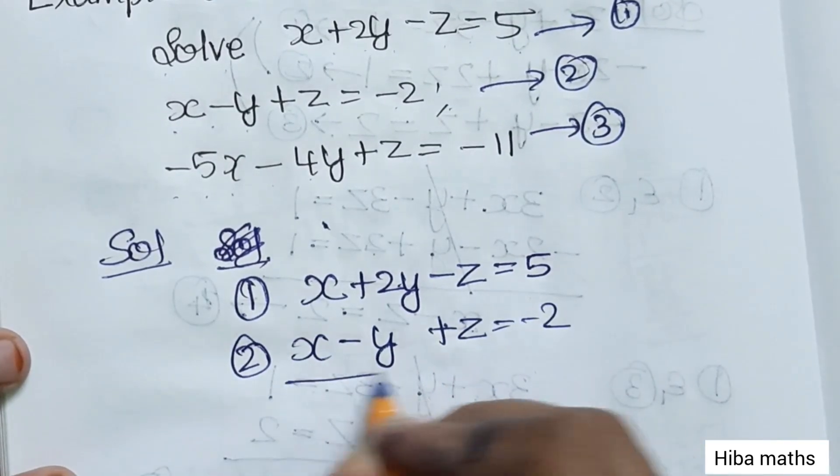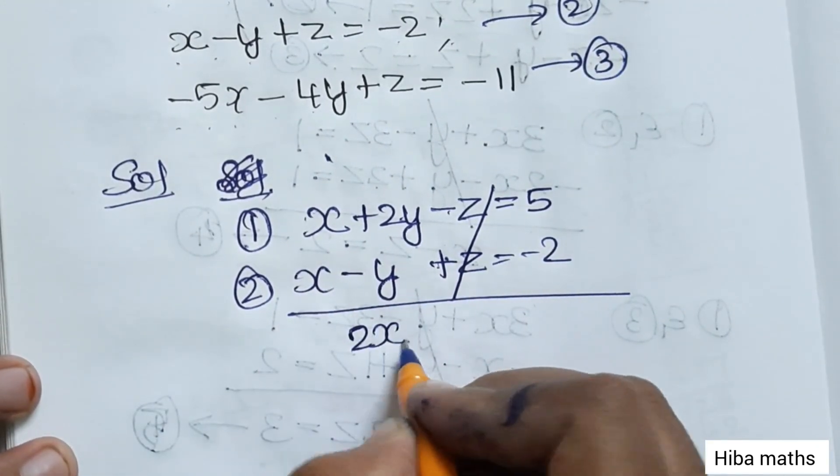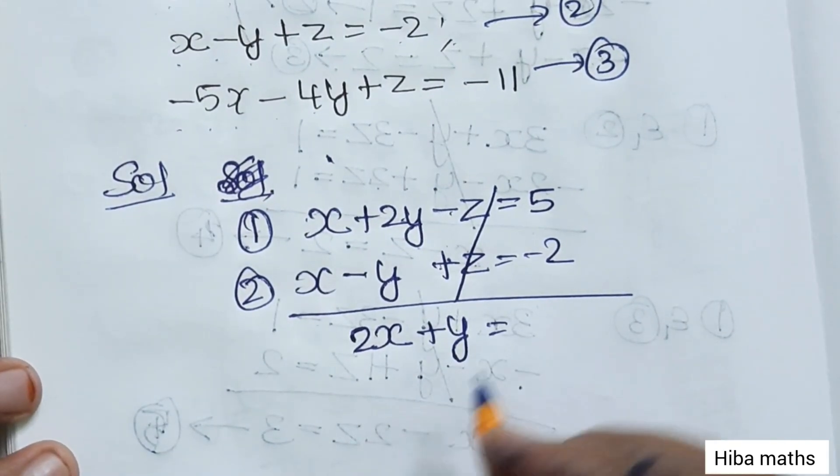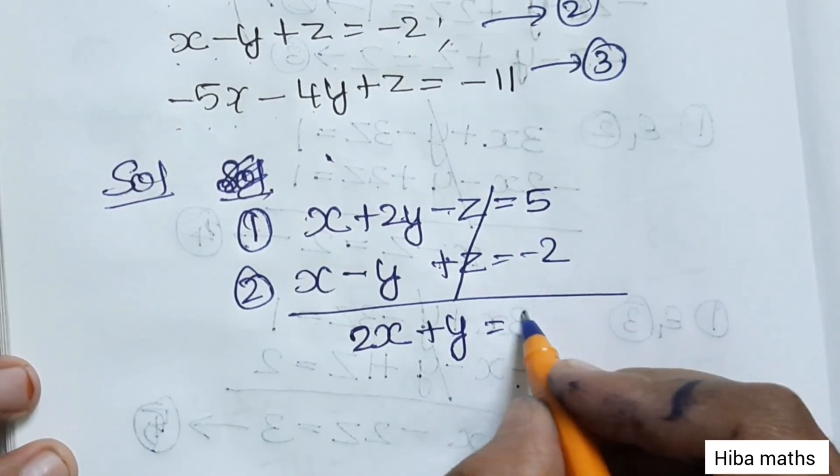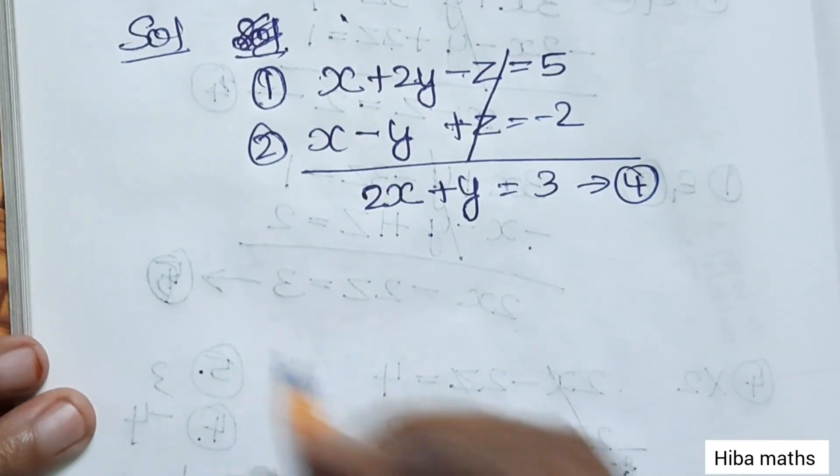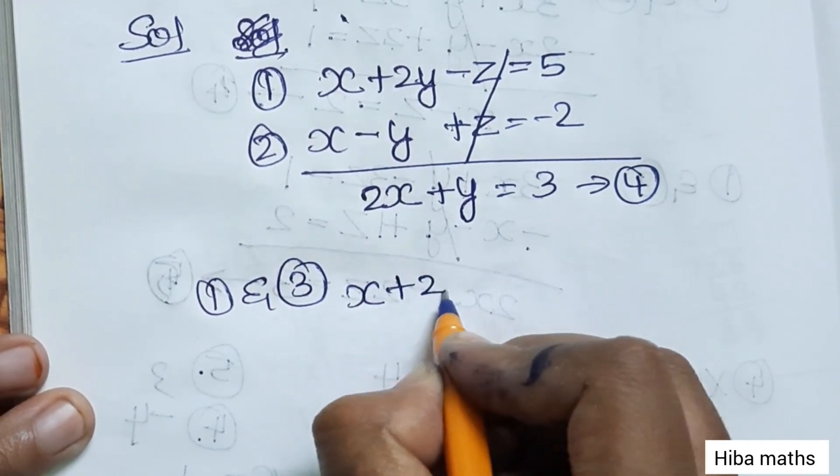Plus z minus z cancels. x plus x is 2x, 2y minus y plus y, 5 minus 2 equals 3. This is the fourth equation. The first equation is x plus 2y minus z equals 5.